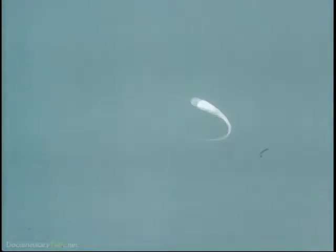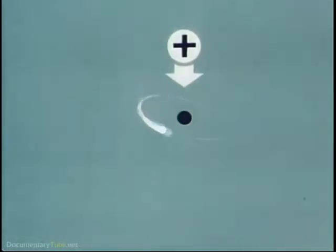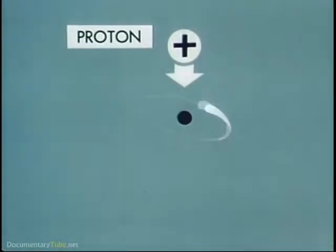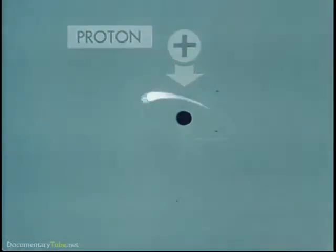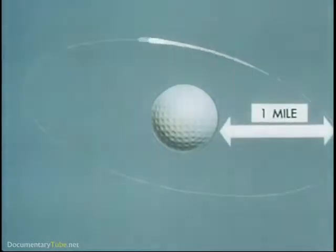It consists of a negatively charged light particle called an electron, which revolves in an orbit about a nucleus. The nucleus of a hydrogen atom is made up of a single particle with a positive electrical charge and is known as a proton. To re-emphasize the submicroscopic nature of our subject, if we could increase the size of the nucleus proton to that of a golf ball, the route of the electron would be about a mile away.